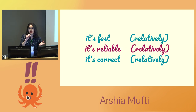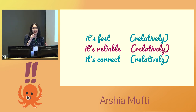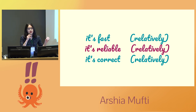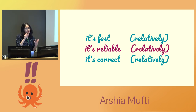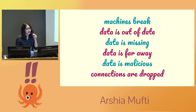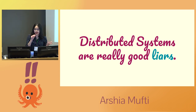So a couple things about DNS. The first is that it's relatively fast — if my laptop needs to look up the address of something and then go to that address, you want that first step to be as fast as possible. The second is that it's pretty reliable — if you can't connect to a web server or load a website, it's rarely because of a DNS error and more because the web server itself has a problem. And the third is that it's pretty correct — if my laptop wants the address of tumblr.com, it's probably going to get the address of tumblr.com and not twitter.com or facebook.com. And this is pretty interesting because things are messed up behind the scenes — machines break, data is missing or far away or not available, connections drop all the time, data is sometimes wrong. Basically, distributed systems like DNS are lying to us all the time because they're quietly breaking and failing.